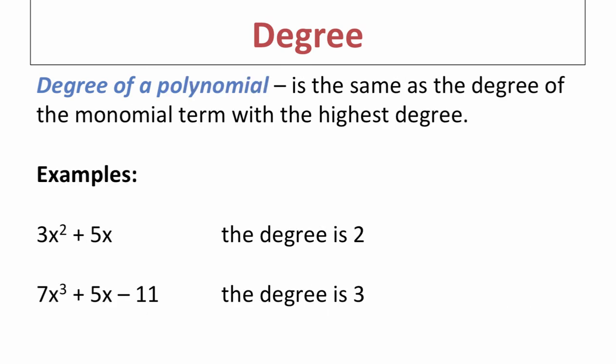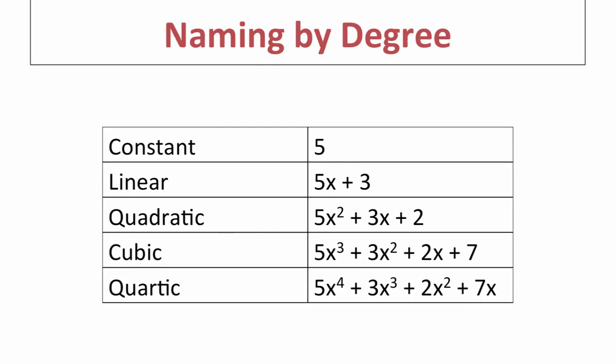The degree of a polynomial is the same as the degree of the monomial term with the highest degree in your expression. For example, in 3x squared plus 5x, the highest exponent is 2, so the degree of that polynomial is 2. In 7x to the third plus 5x minus 11, the highest exponent is 3, so the degree is 3.